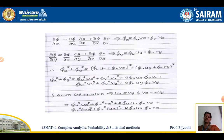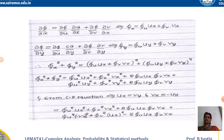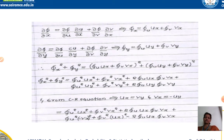Similarly, φ_y = φ_u·u_y + φ_v·v_y. Squaring and adding φ_x² + φ_y², we get (φ_u·u_x + φ_v·v_x)² + (φ_u·u_y + φ_v·v_y)². Expanding, φ_x² + φ_y² = φ_u²·u_x² + φ_v²·v_x² + 2φ_u·u_x·φ_v·v_x + φ_u²·u_y² + φ_v²·v_y² + 2φ_u·u_y·φ_v·v_y.